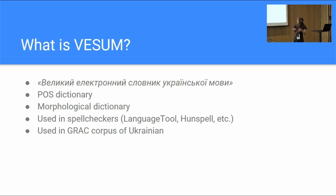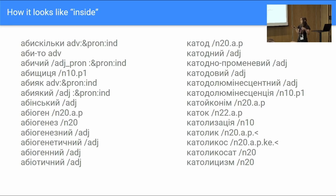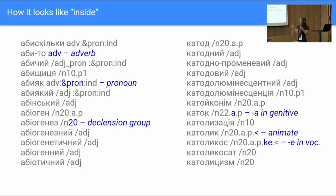What does this dictionary look like inside? It has a so-called internal representation where it does not have all the word forms — just the lemmas written in Cyrillic. For each lemma, the tags after the slashes show a special script for how to form all the word forms. It provides information on part of speech — whether it's an adverb, a noun, and so on.